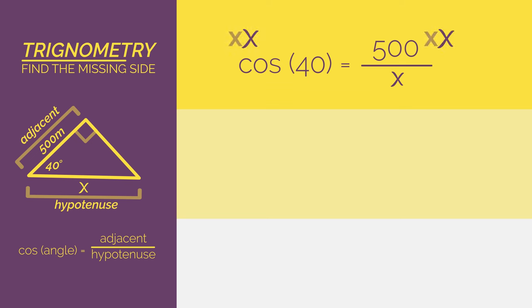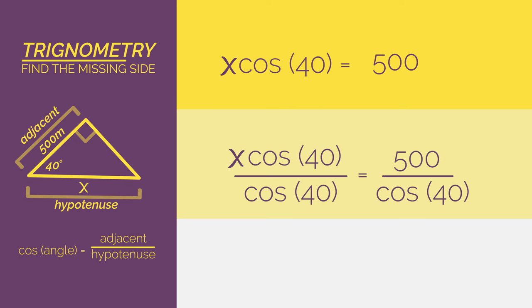Multiply both sides by x and so these x's cancel. Divide by cos 40 on both sides and they cancel. So we get x equals 500 divided by cos 40. So all that rearranging and we just end up with the x and the cos 40 switching places.